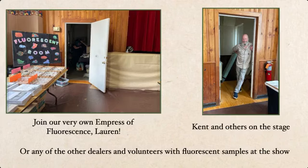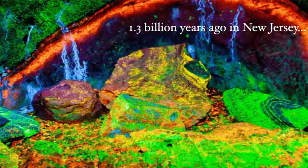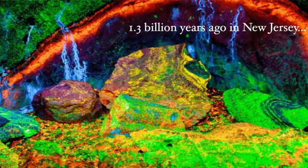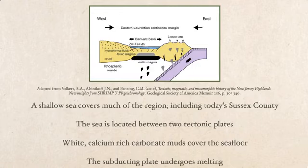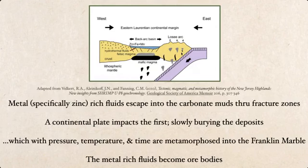There is a very major source for fluorescent minerals and information right in our general area — probably the most major one. Let's go back 1.3 billion years to the wonderful state of New Jersey, where a shallow sea is covering today's Sussex County, located between two tectonic plates. As one plate subducts under the other, it undergoes melting, while the sea floor between them has white, calcium-rich carbonate muds.